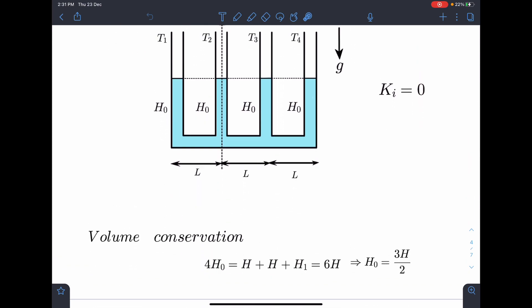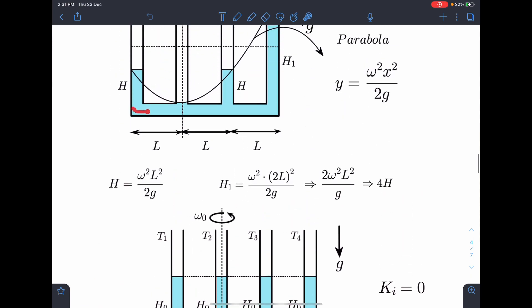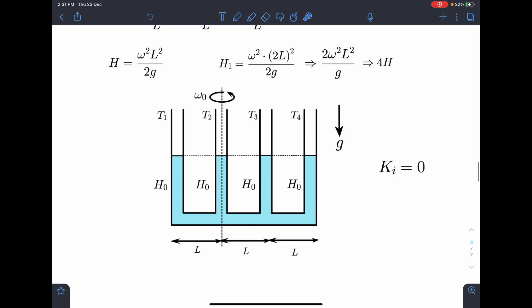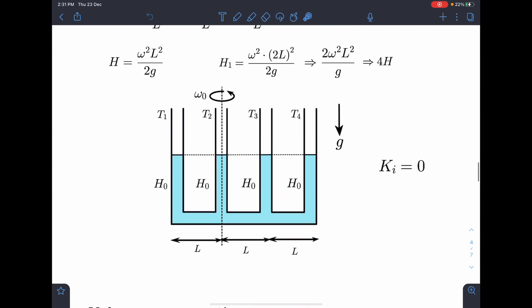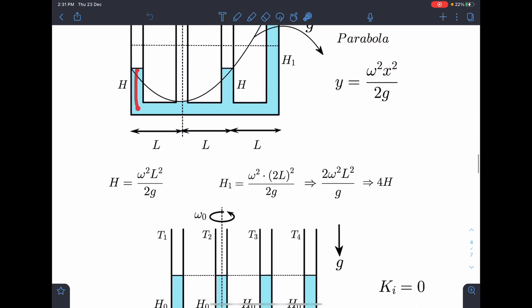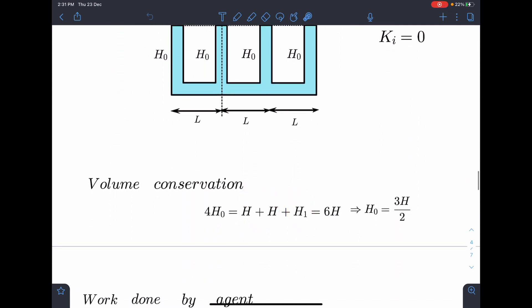We can conserve the volume. So we can say here, see this part has same volume. So no need to consider it. Here also it is same. So just volume of this part, this part and this part will be same as volume here, here, here and here. Since cross section area is same, I can directly conserve the heights because A will get cancelled. So 4h0 is equal to 2h plus h1.